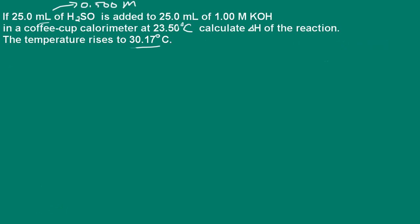Hi, welcome to Pathways to Chemistry. I'm Dr. O'Connor. Here we're told that we have 25 milliliters of sulfuric acid mixed with 25 milliliters of potassium hydroxide in a coffee cup calorimeter at 23.5 degrees Celsius. We're told the temperature rises to 30.17 degrees, and we're asked to calculate the enthalpy change, or delta H, of the reaction.